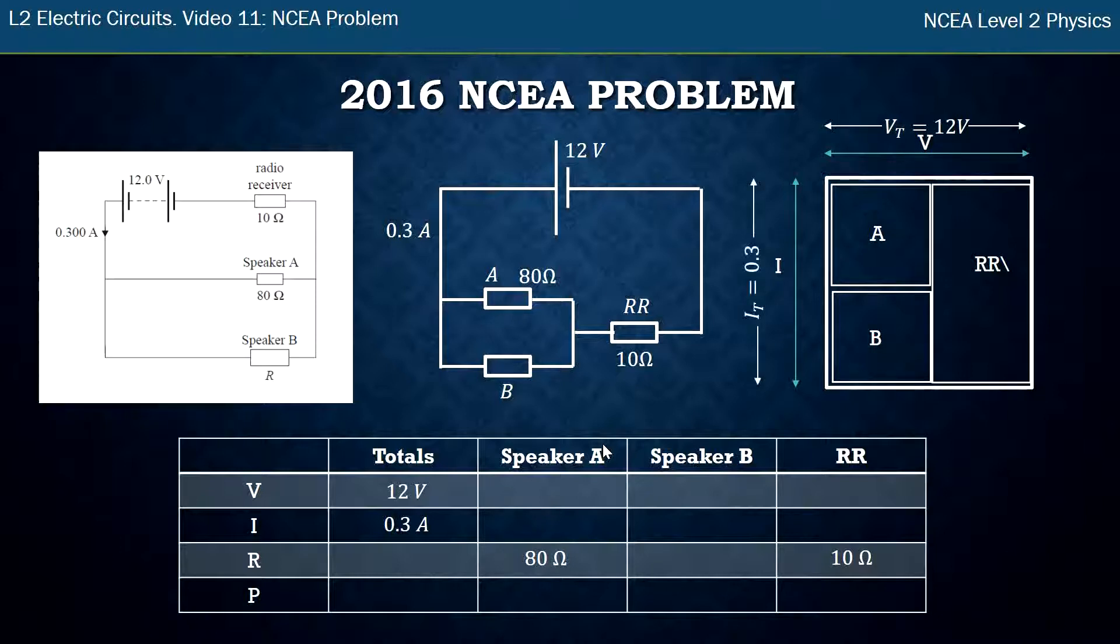I know the total current that's the height there and it turns out that I could look at the radio receiver and it has the same height as the total so it has the same total current. So now I can fill in that current for the radio receiver. Great.